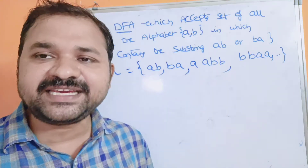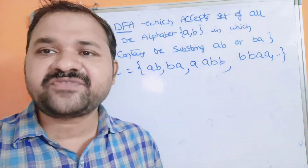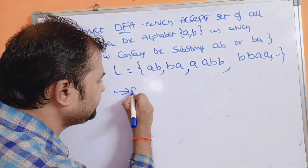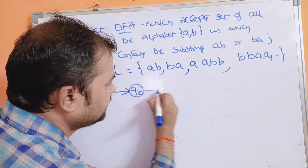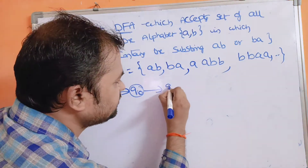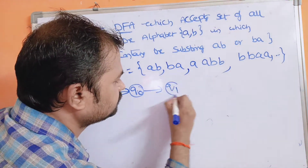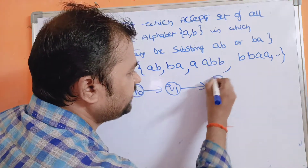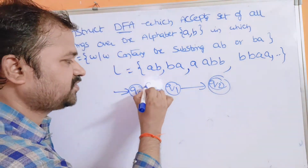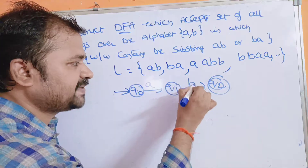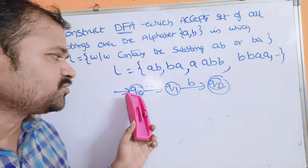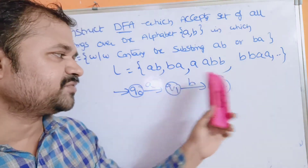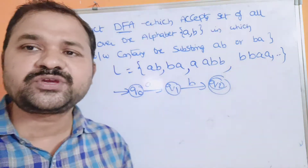Since the size of the substring is 2, we need 2 plus 1 equals 3 minimum states. Let the first state be Q0, the second state Q1, and the third state Q2. For AB: if we apply A on Q0 we go to Q1, and if we apply B on Q1 we go to Q2.